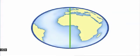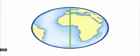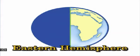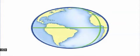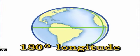We can also divide Earth along the prime meridian. The half of Earth west of the prime meridian is called the western hemisphere. The half of Earth east of the prime meridian is called the eastern hemisphere. The eastern and western hemispheres meet at 180 degrees longitude.